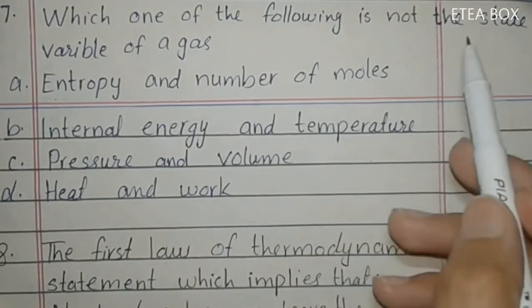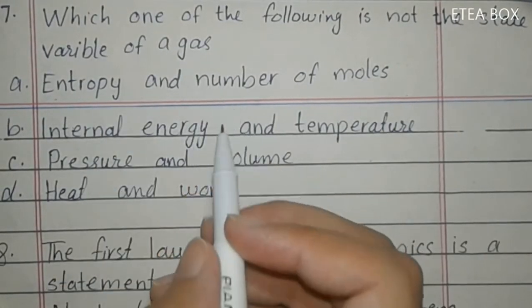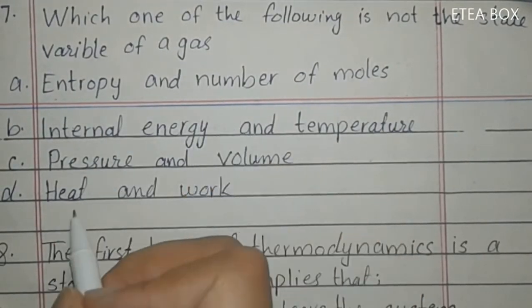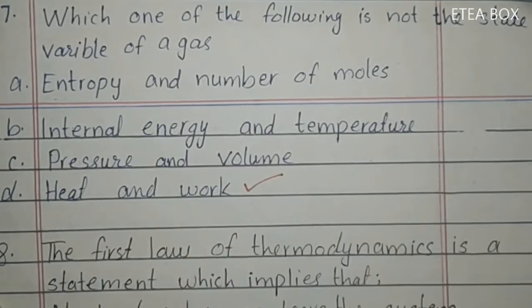Seventh MCQ: which one of the following is not a state variable of a gas? Heat and work are not state variables. Here option D is correct.